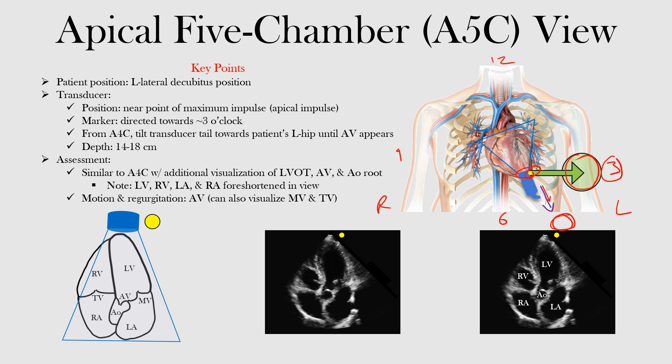So what do we see in this view? We have three different depictions: a cartoon depiction on the left side, an unlabeled image in the middle, and a labeled image on the right. Notice that we brought the aortic valve into place — it's sitting in the center. Here's the aorta, and then you have the valve. You're seeing the left ventricular outflow tract, the LVOT, the aortic valve, and the aortic root. That fifth chamber is essentially the aorta — the valve, the root, and the outflow tract. You can also see the left atrium, the right atrium, the left ventricle, and right ventricle.